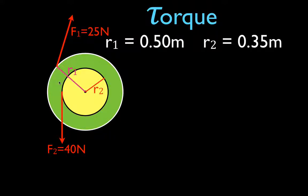The green disc represents one of the two wheels and has a radius of 0.5 meters. The other wheel, attached to the first, is the yellow disc, which has a radius of 0.35 meters. Both wheels share a common axis of rotation, so they spin and turn at the same time.